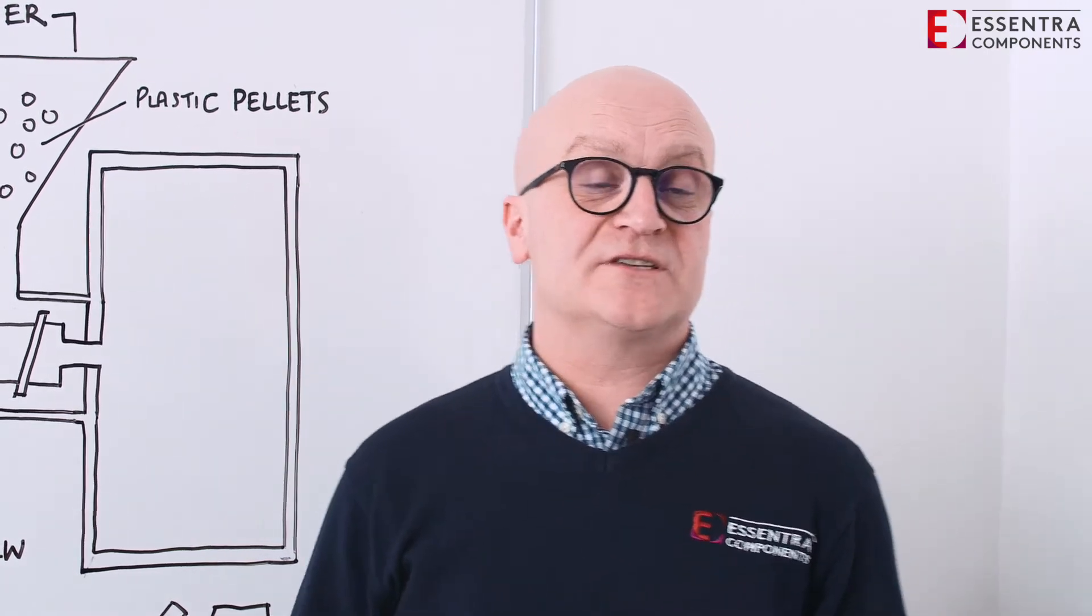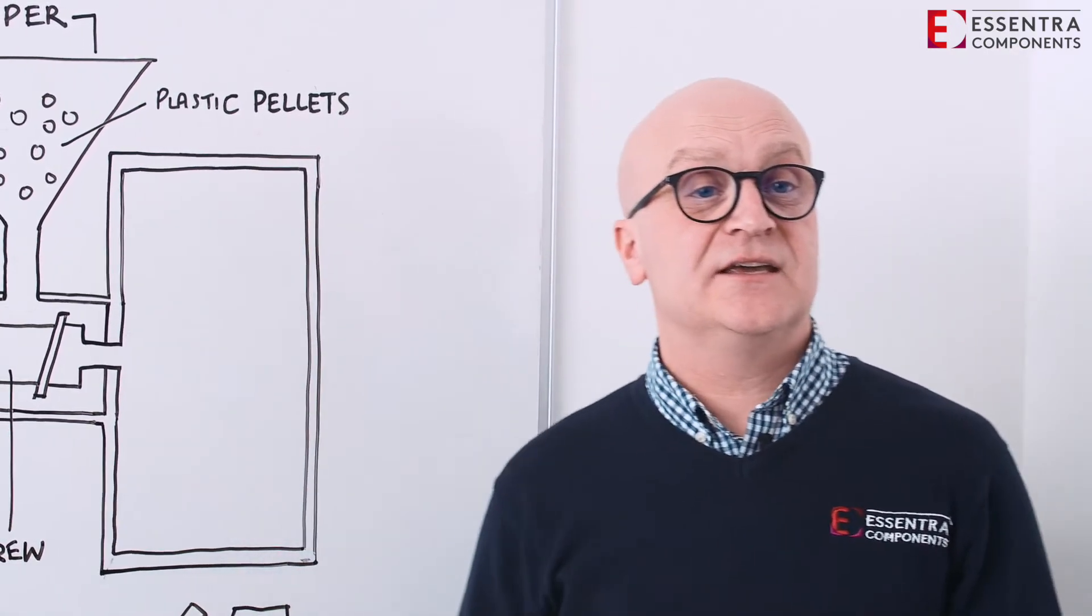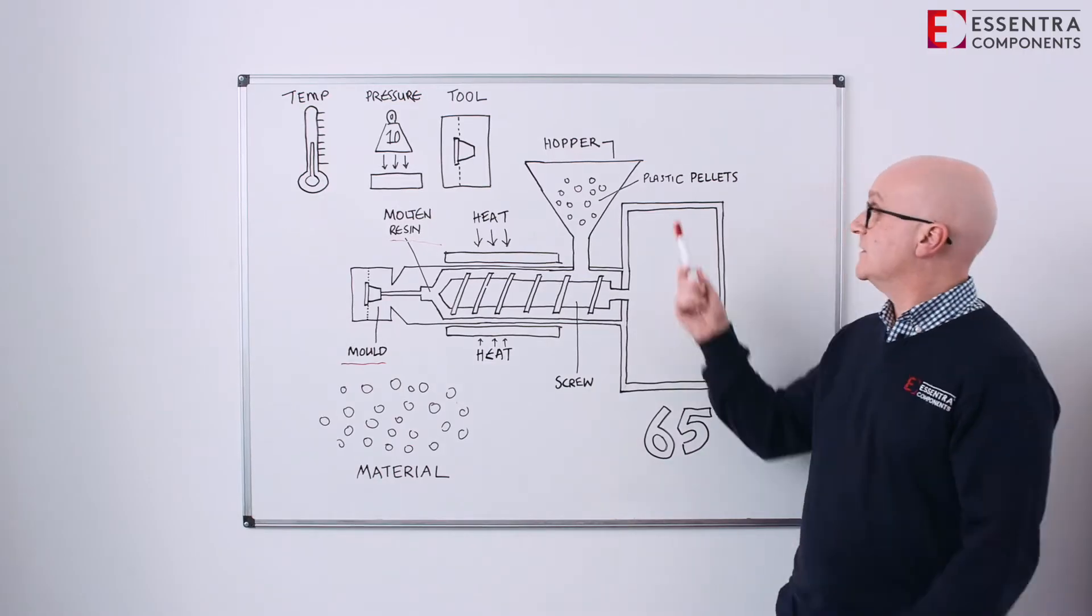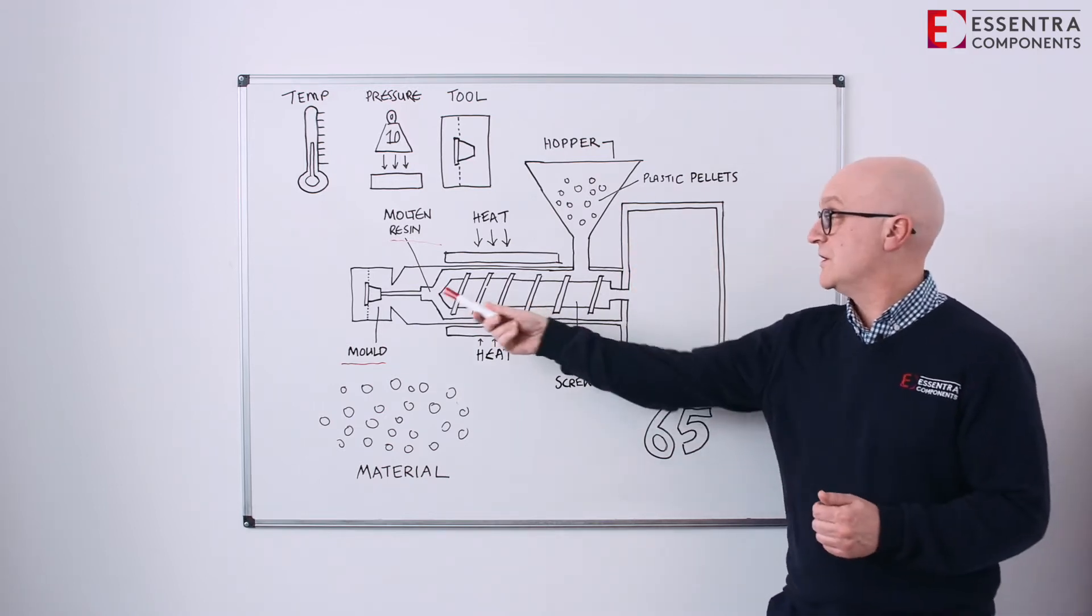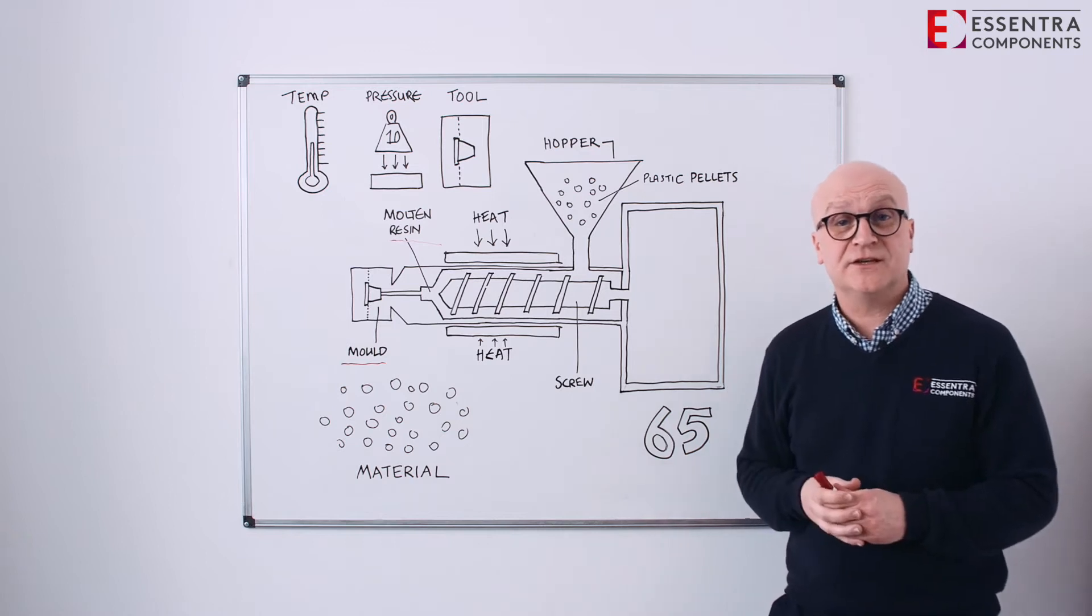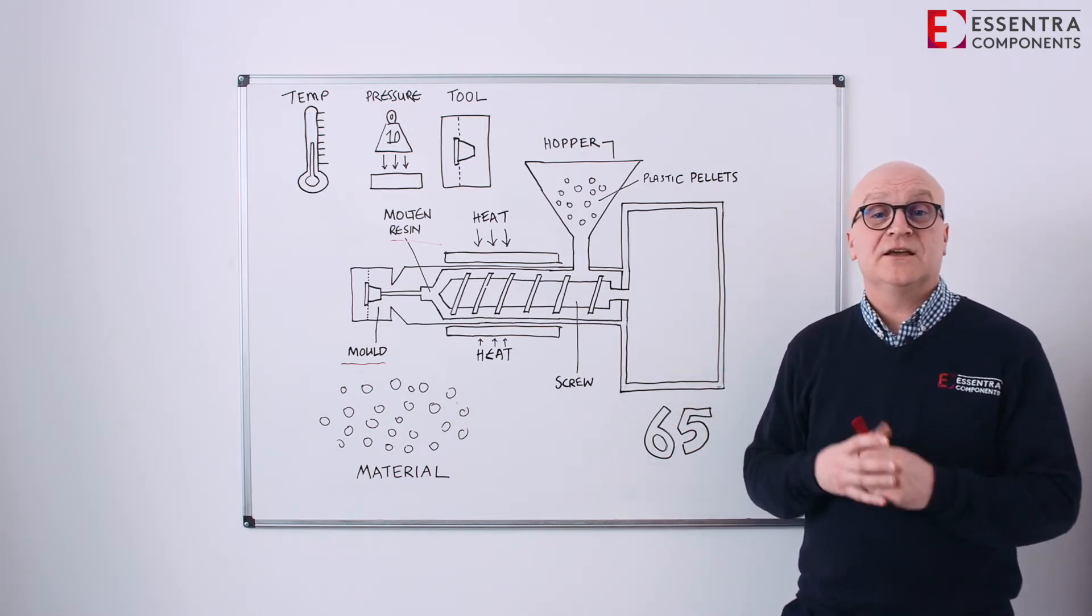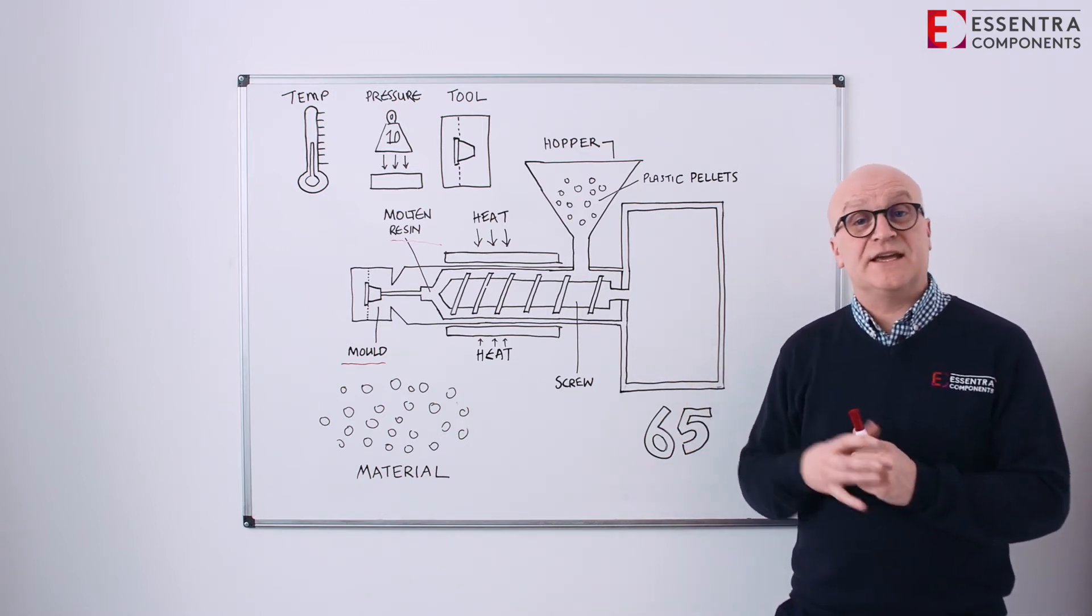Once the preset hold pressure time has elapsed, the next stage is the machine needs to screw back for the next shot, ready to make the next part. So it's very important that we have a constant supply of material into the injection unit. This enables the screw to screw back to its final position, making the machine ready to inject the next shot into the tool.